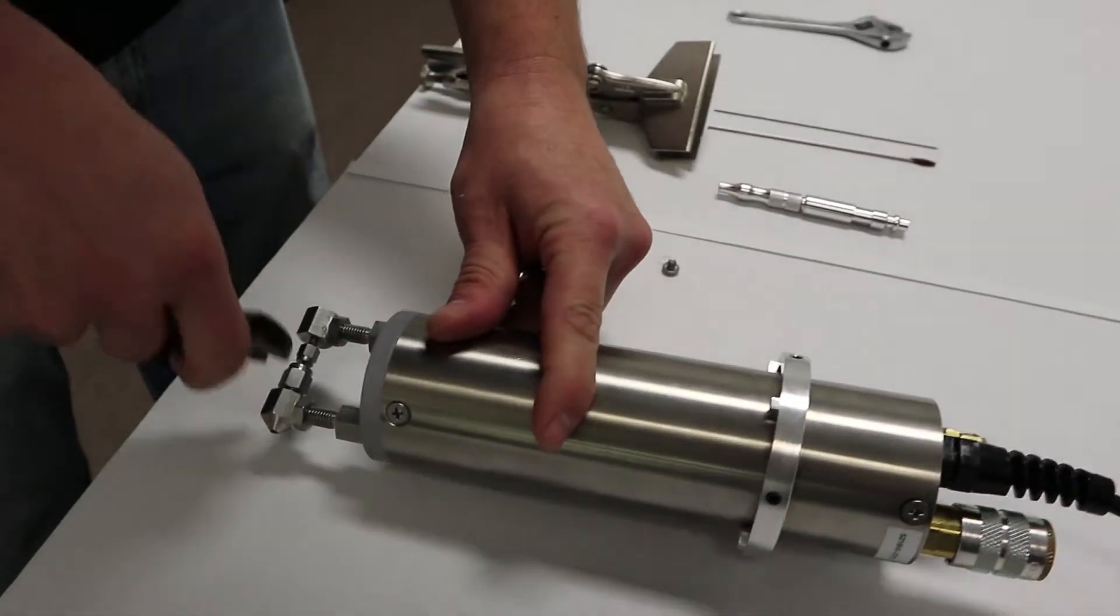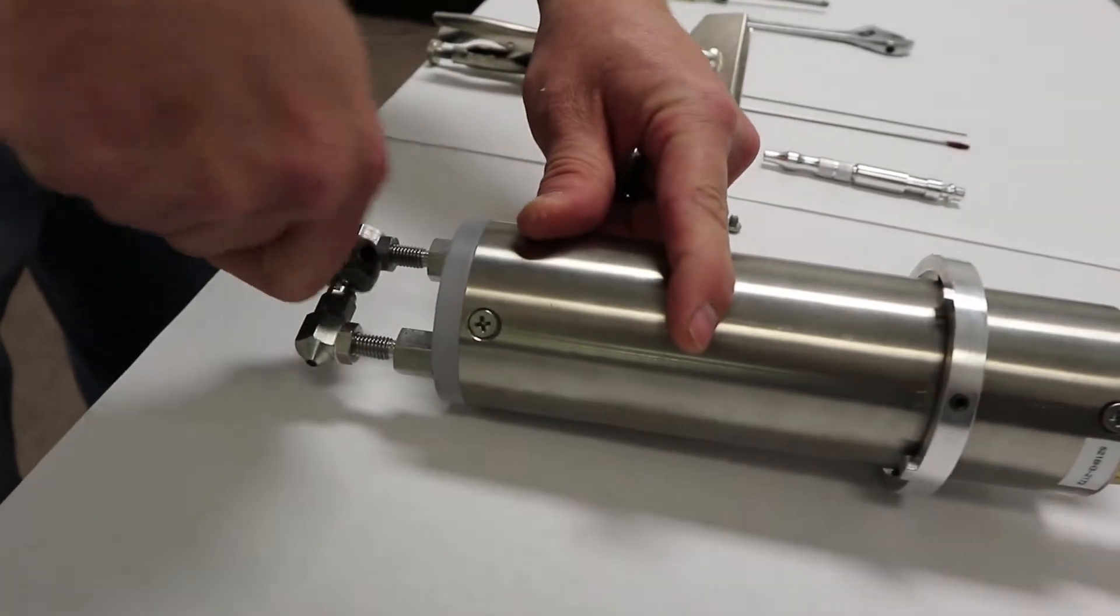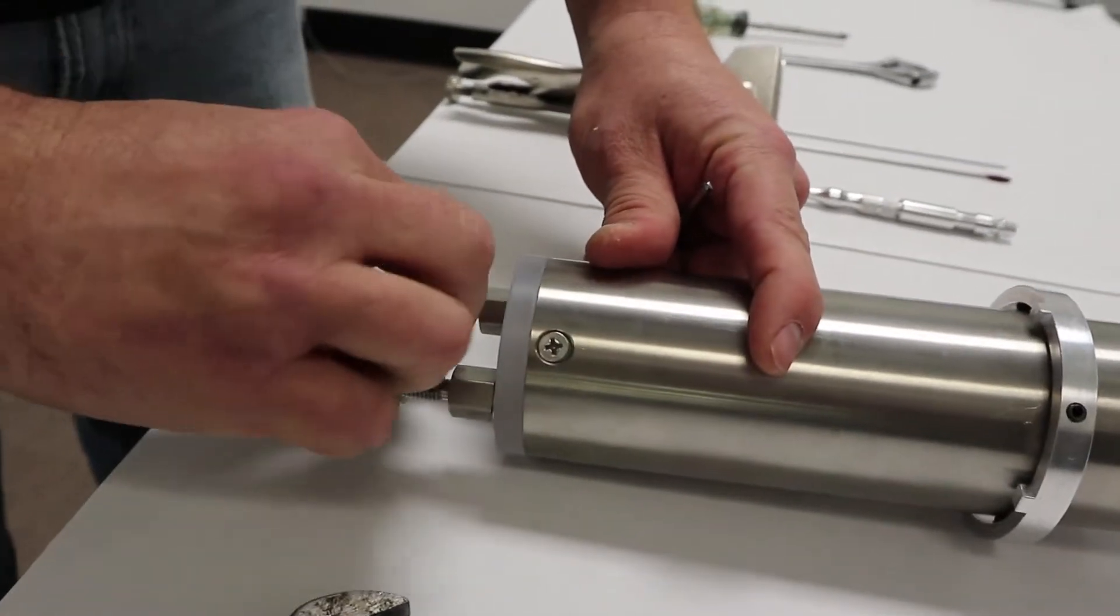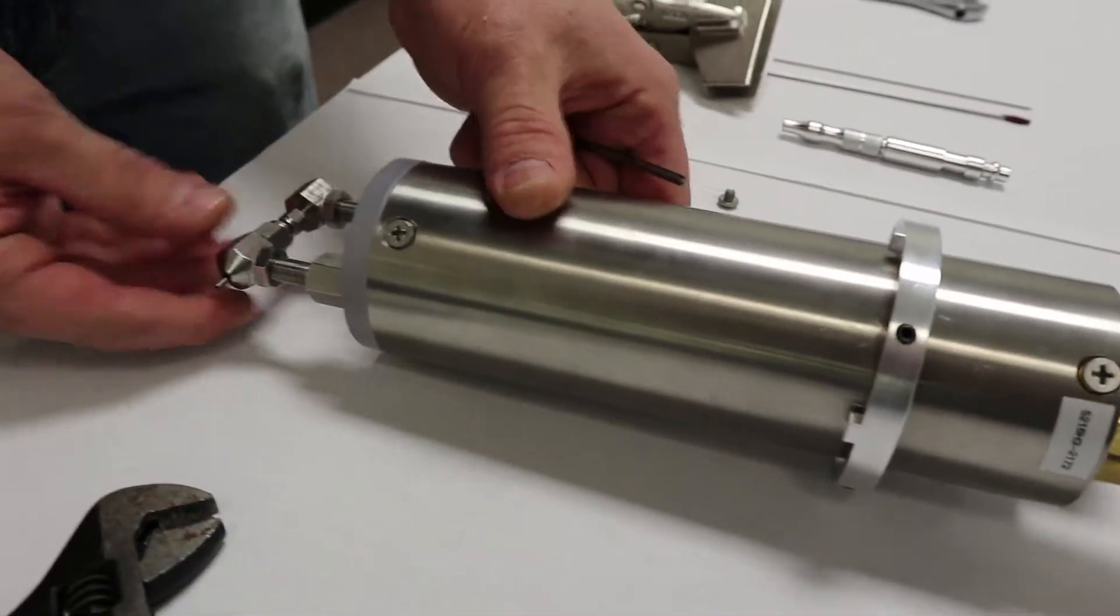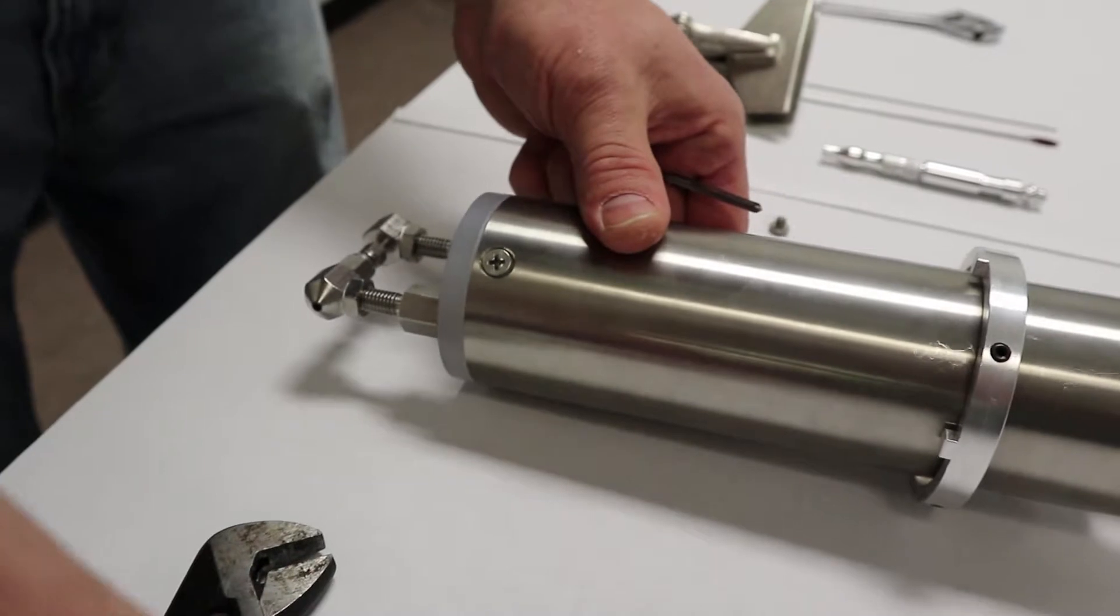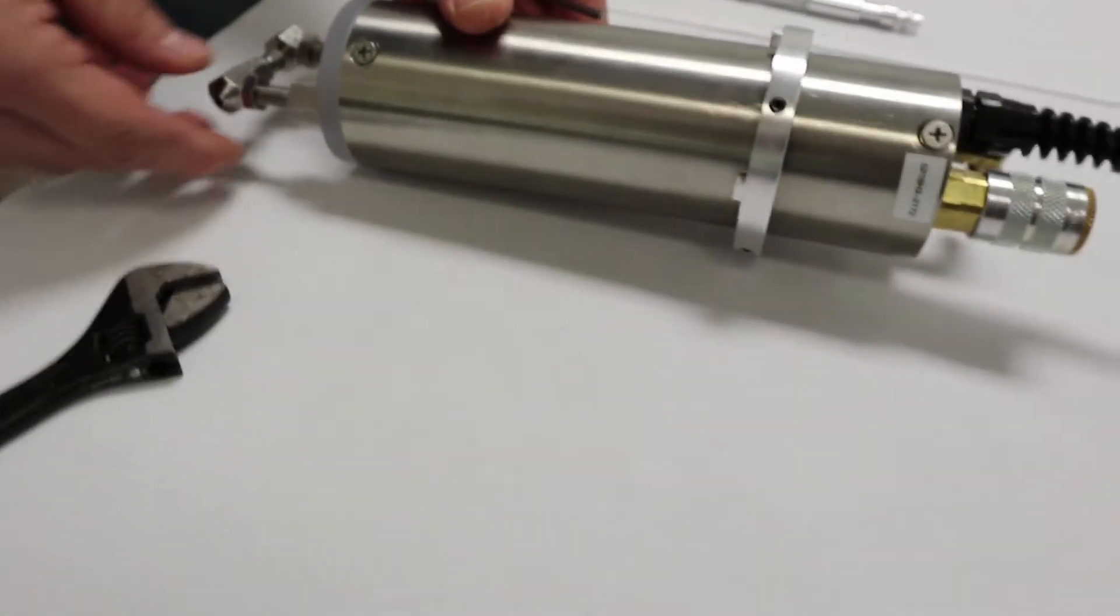usually I will take a wrench and loosen these up just a little bit. They should only be hand tightened to begin with, so they shouldn't be very tight. And then I usually take the reamer and just kind of push out that sealant tube and just put that off to the side there. Don't lose it.